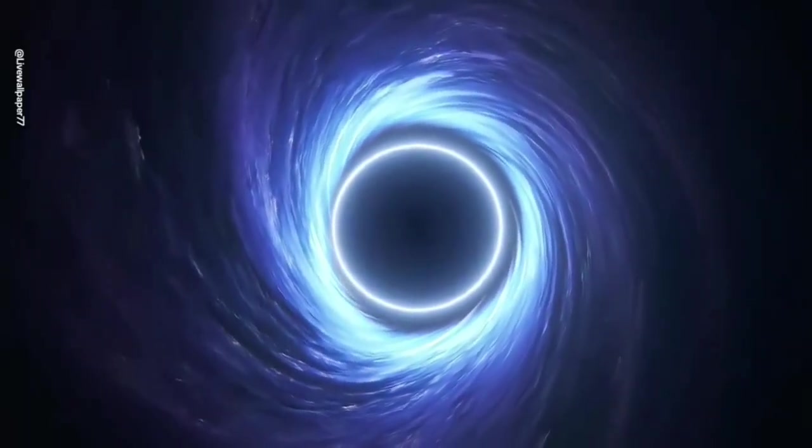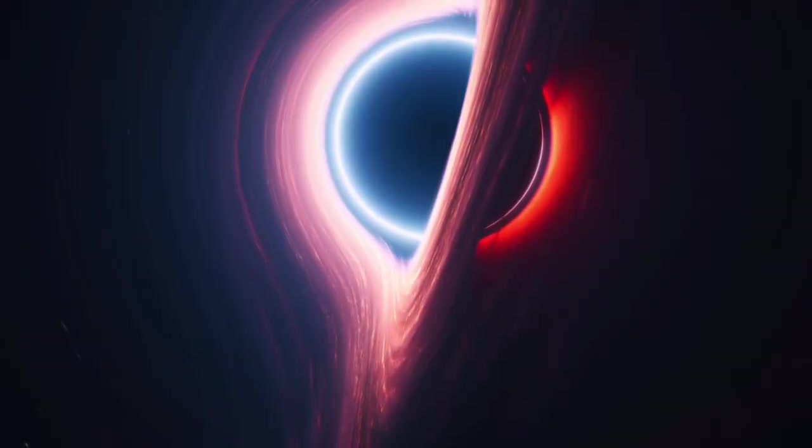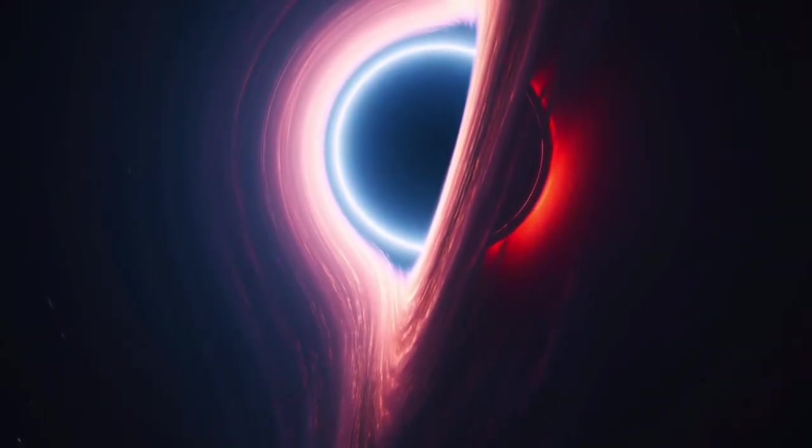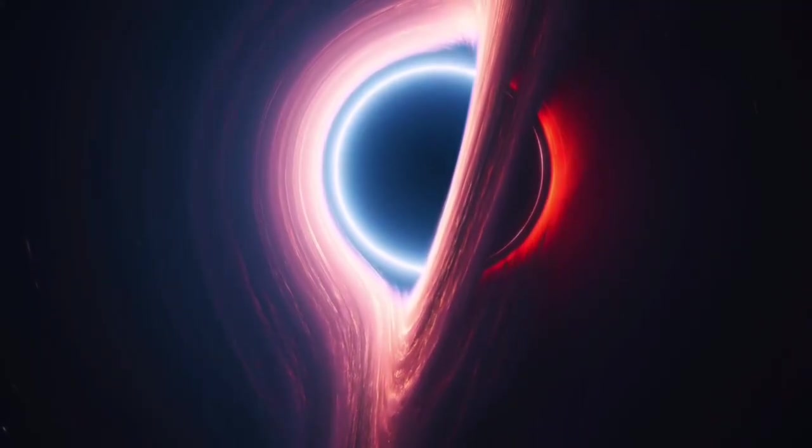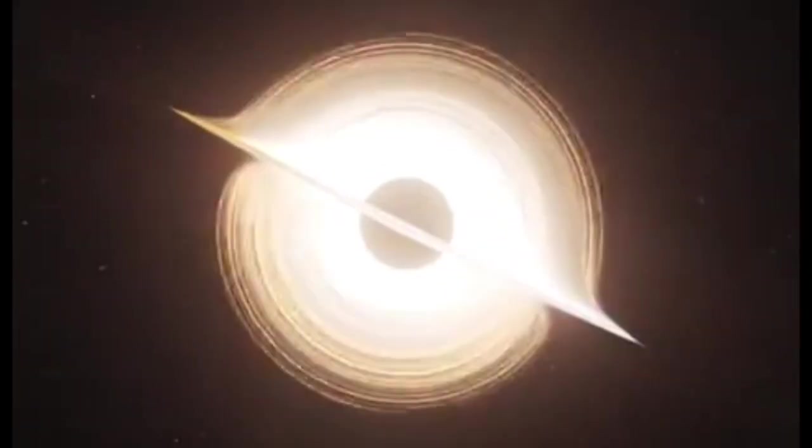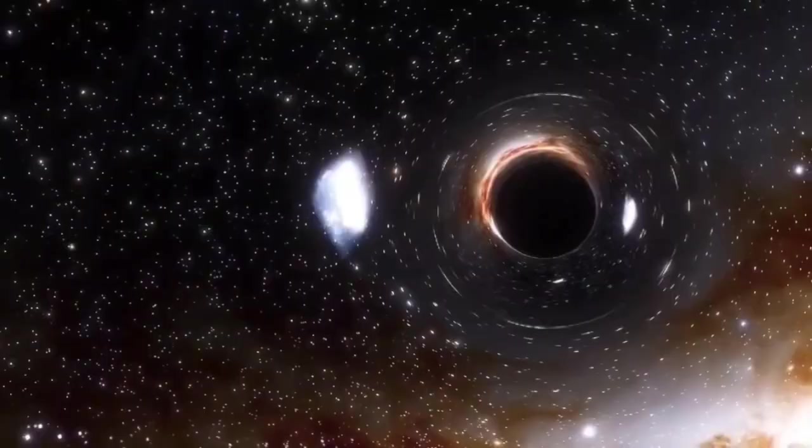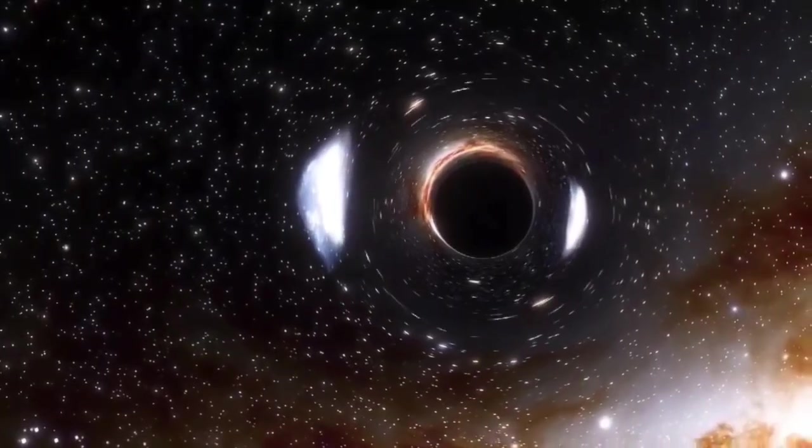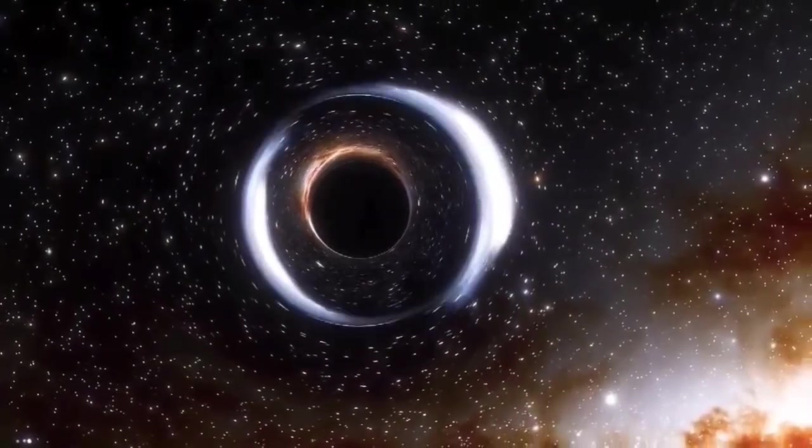What's even more intriguing is that each black hole is unique in its own right. While they follow the general three-layer structure, the way they behave can vary significantly. This makes them particularly challenging to study, as conventional scientific methods don't apply. Scientists have no choice but to investigate these anomalies through indirect means, such as observing the radiation emitted from them or analyzing the gas and dust swirling around them.